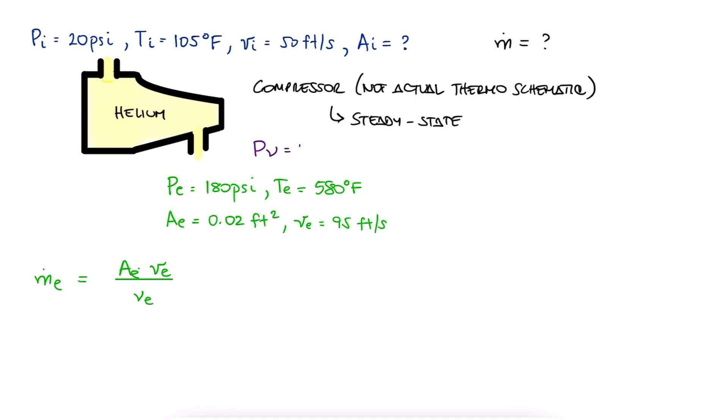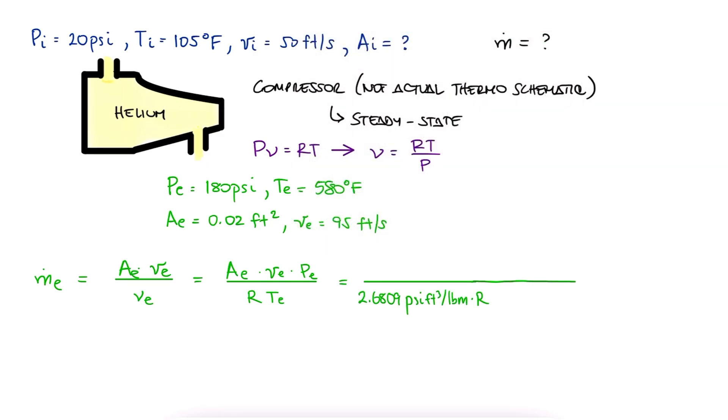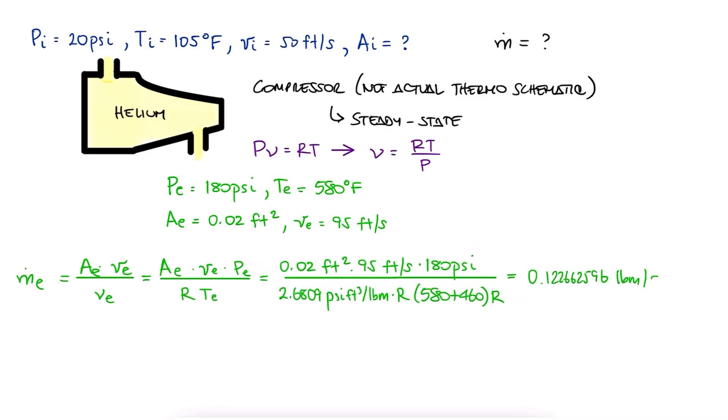Using the ideal gas equation, we find that V is RT over P. We replace this in the mass flow expression, look up the gas constant for helium in English units, and substitute all given values, with temperature in Rankine, to find the mass flow rate.